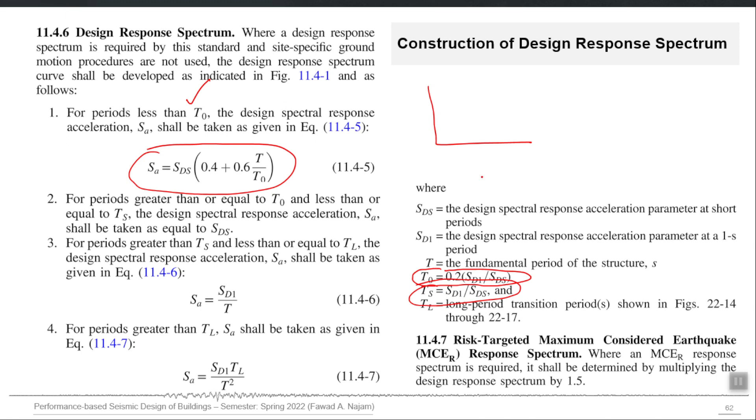Once you have your SDS and SD1 for your site, which is actually what the design level spectral accelerations already modified for the local soil effect, you can put that in this equation, vary T from 0 to T0 and plot that first line. From T0 to TS keep it flat, and from TS onwards use this equation up till TL, and after TL use this equation.